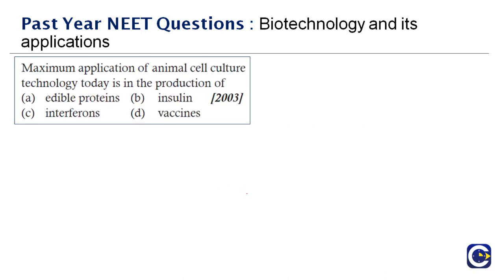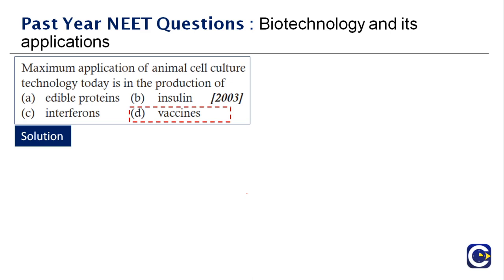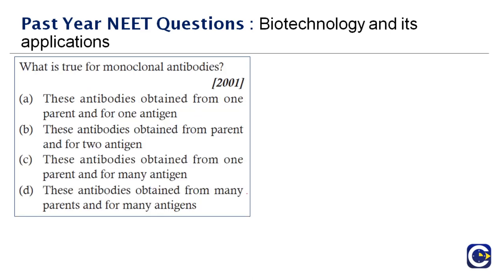Next question, asked in 2003: the maximum application of animal cell culture technology today is in the production of — options include interferons, insulin, edible proteins, and vaccines. The major application is vaccines, since everybody uses them predominantly, whereas the other products are used only when a patient specifically requires them. Therefore the right answer is option D.